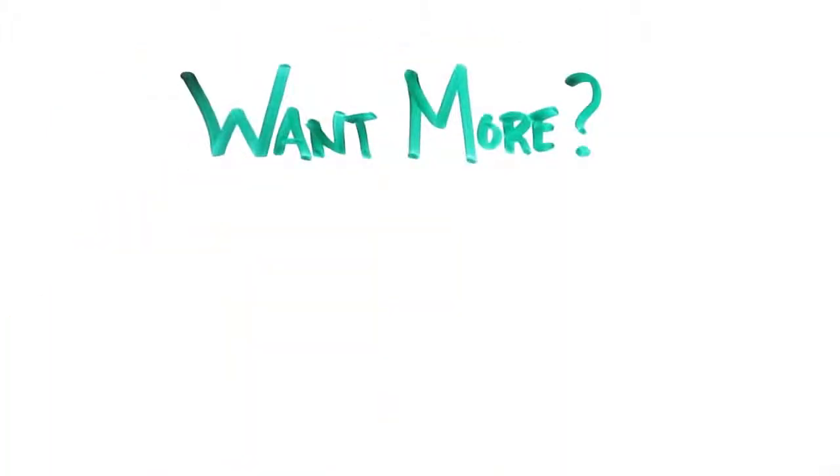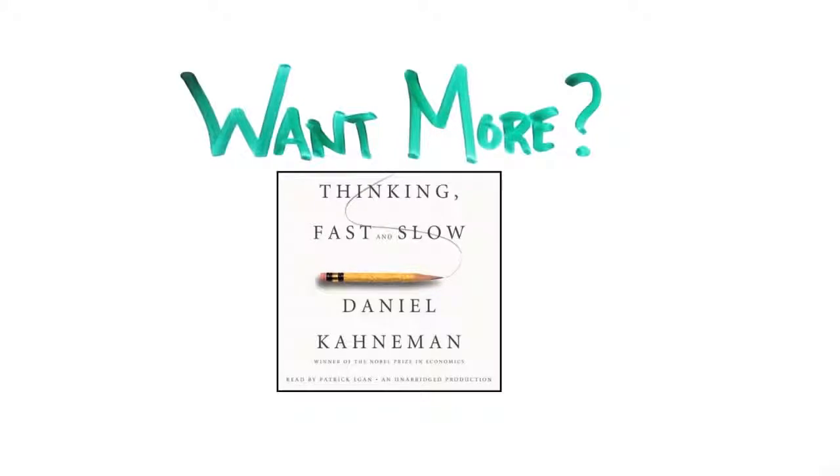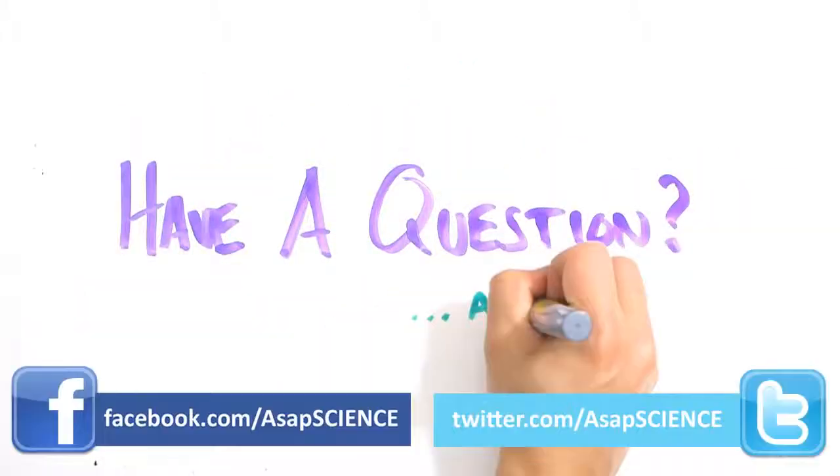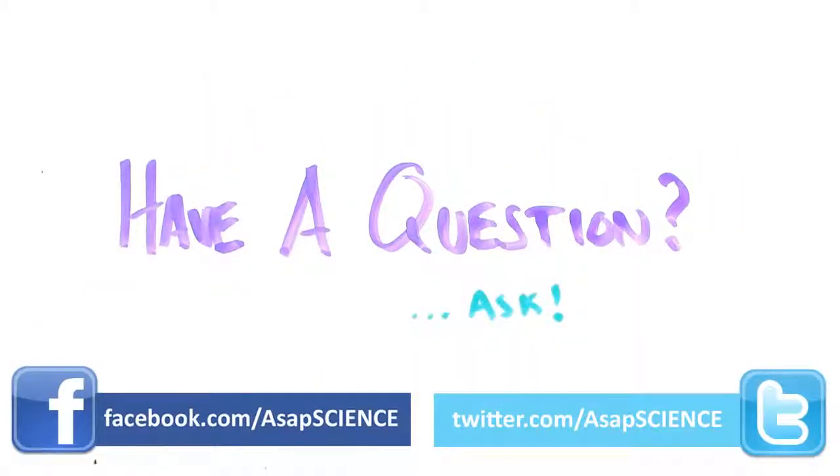If you'd like to learn more about the thinking systems in your brain, check out the book Thinking Fast and Slow by Daniel Kahneman which covers it in great detail. I'll put a link in the description which you can check out. Got a burning question you want answered? Ask it in the comments or on Facebook and Twitter. And subscribe for more weekly science videos.